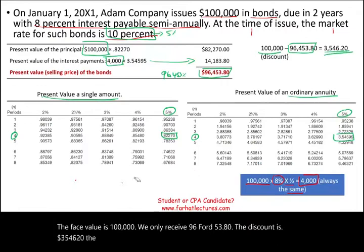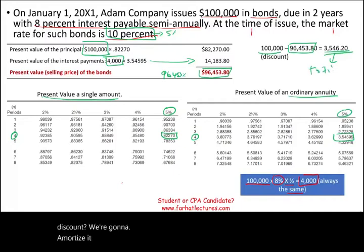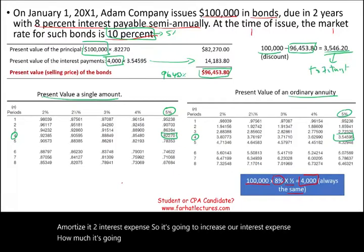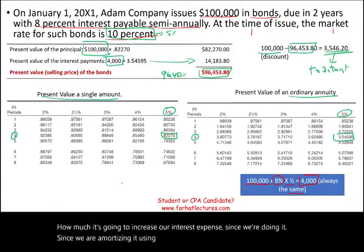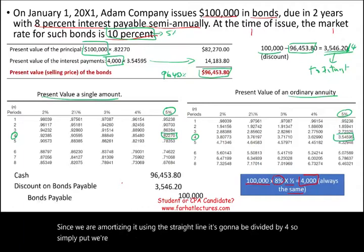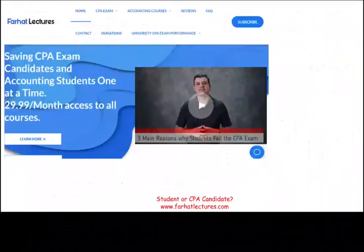The discount is a contra liability. We're going to amortize it to interest expense, which will increase our interest expense. Since we're amortizing using the straight line method, the discount is divided by four. The journal entry at issuance is: debit cash $96,453, credit bonds payable $100,000, and we will amortize the discount over four periods.